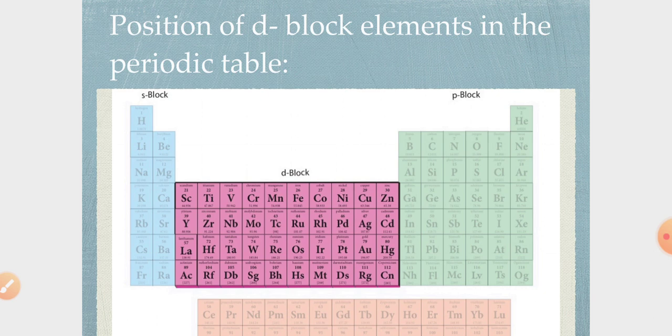Atomic number 21, Scandium 21, Titanium 22, Vanadium 23, Chromium 24, Manganese 25, Iron 26, Cobalt 27, Nickel 28, Copper 29, Zinc 30. The electrons will add.